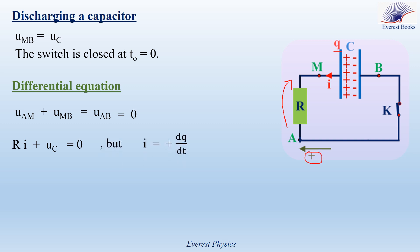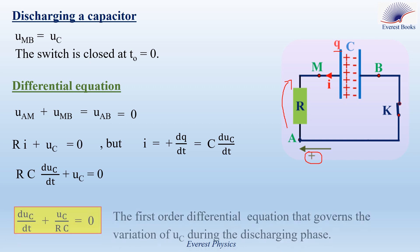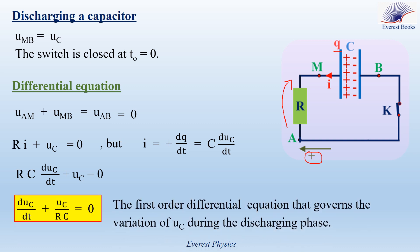So UAM equals RI and UMB equals UC, then RI plus UC equals 0. The positive sense enters the capacitor through the plate of charge Q, then I equals dQ/dt, and Q equals C times UMB, or C times UC. Therefore I equals C times dUC/dt. Replacing I, we get RC·dUC/dt plus UC equals 0. Dividing both sides by RC gives the differential equation: dUC/dt plus UC over RC equals 0, which is the first-order differential equation governing the variation of UC during the discharging phase.